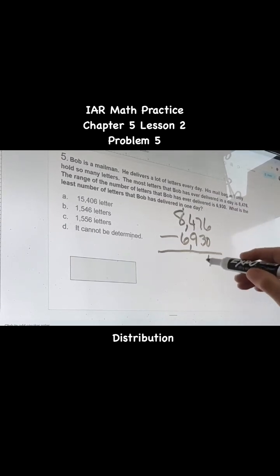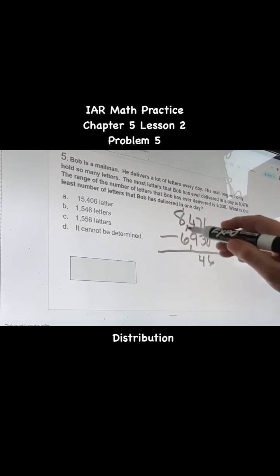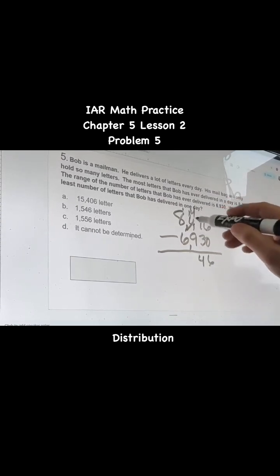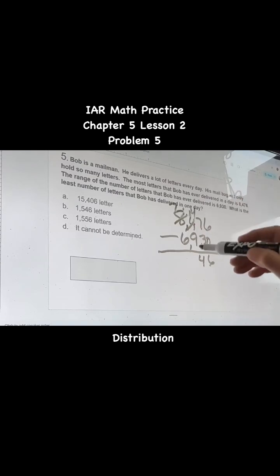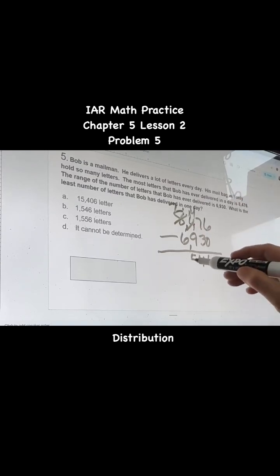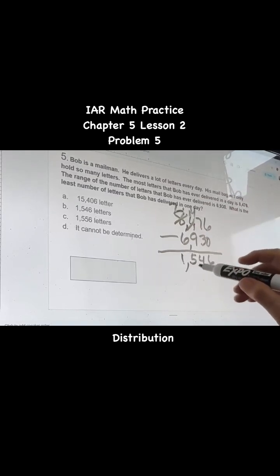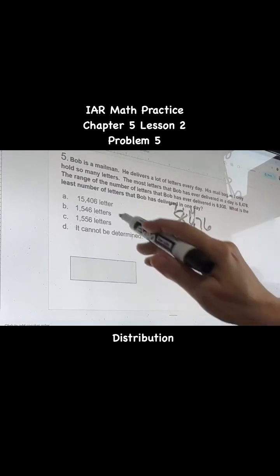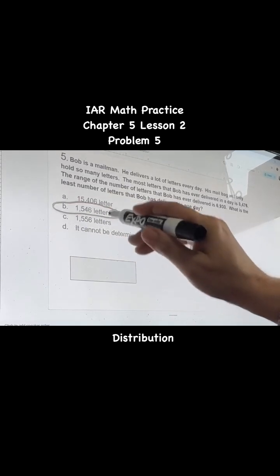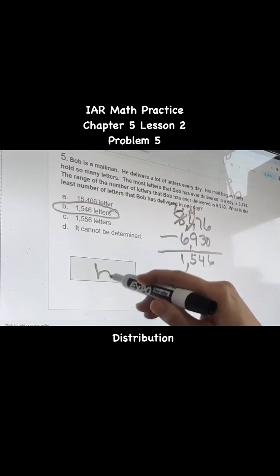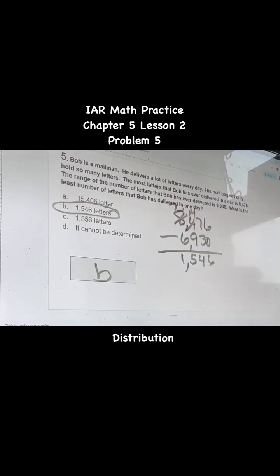Six, four, fourteen, and that would be five, and that'd be one. 1,546 letters. Your answer should be B.